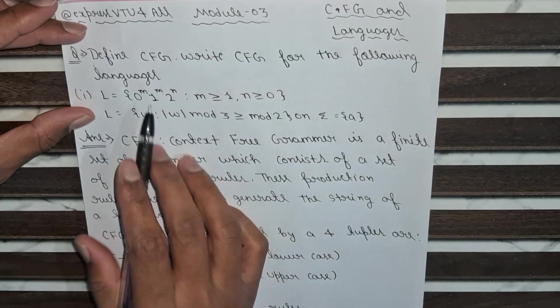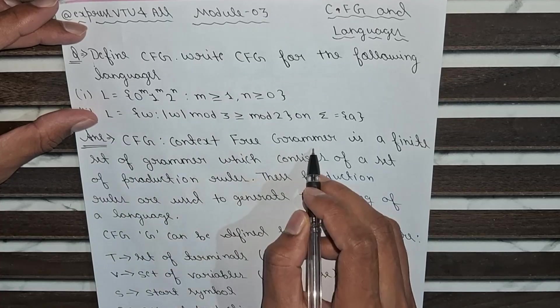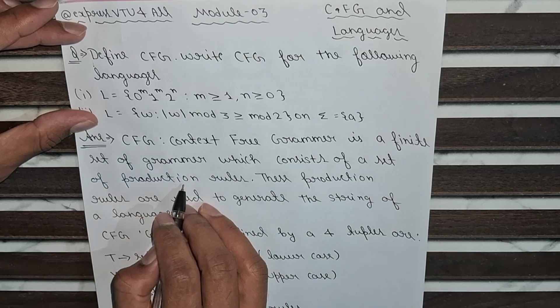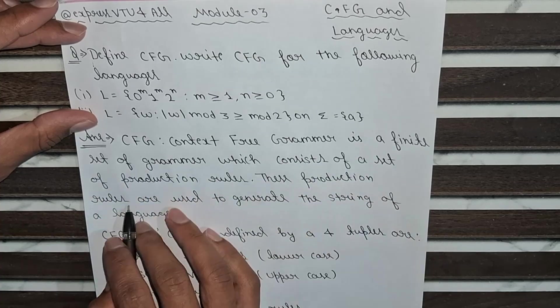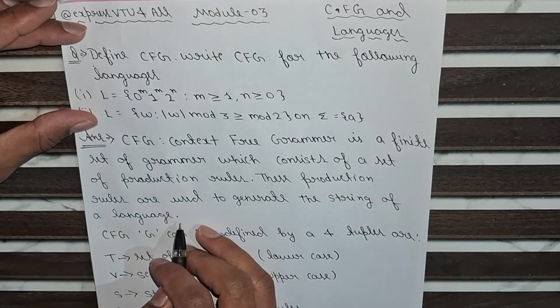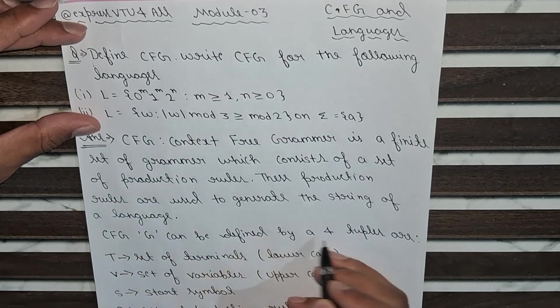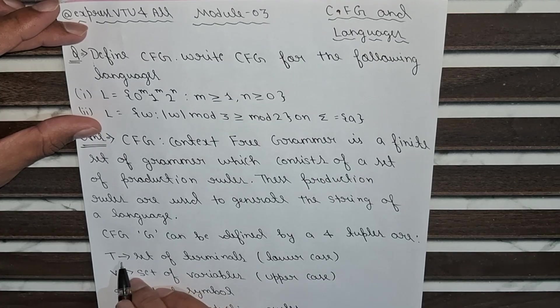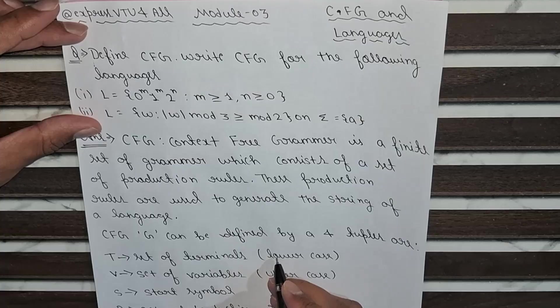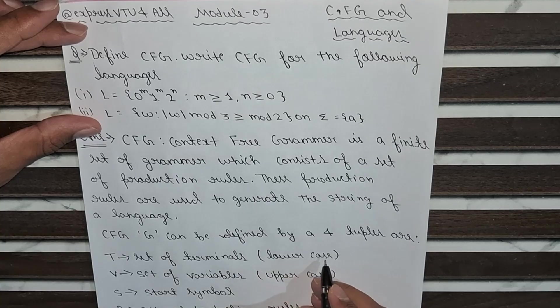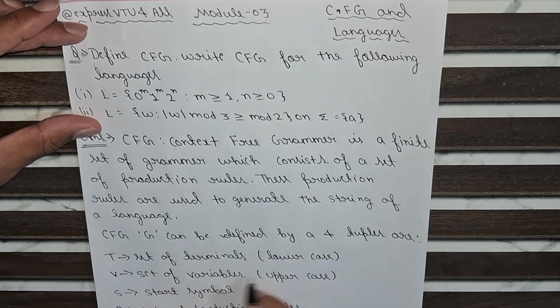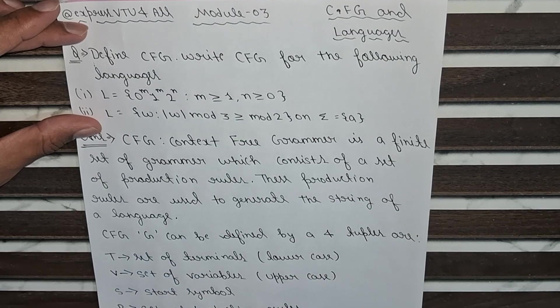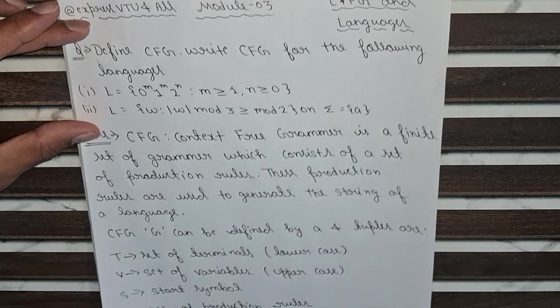So firstly we will define what is CFG. CFG is a Context-Free Grammar, a finite set of grammar which consists of a set of production rules. These production rules are used to generate the string of a language. CFG can be defined by four tuples: T, V, S, and P. Here T stands for set of terminals, usually denoted by lowercase. V is set of variables, denoted by uppercase. S is a start symbol, and P is the set of production rules.